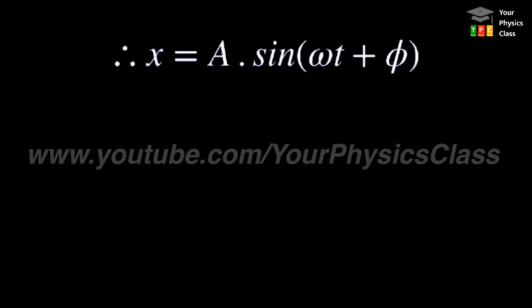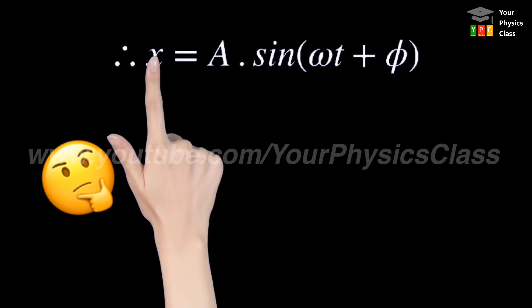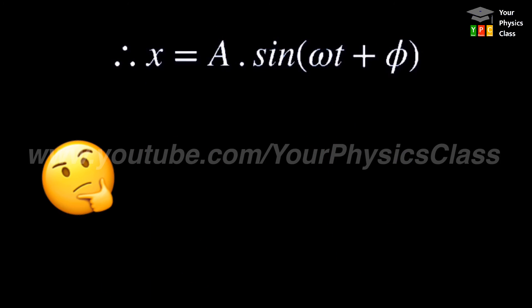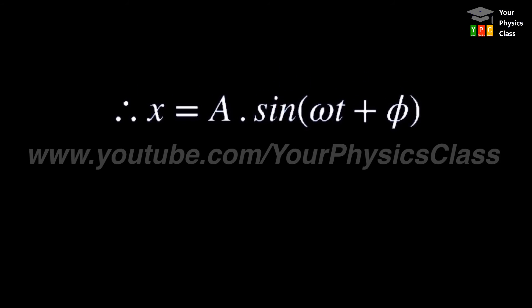Here, a, omega, and phi are constants. x is the quantity that depends on time. So this is the expression for displacement of a particle performing linear SHM.